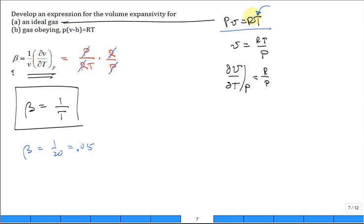It has to be in Kelvin, absolute temperature scale. So if they said 20 degrees C, it's 1 over 293 Kelvin.